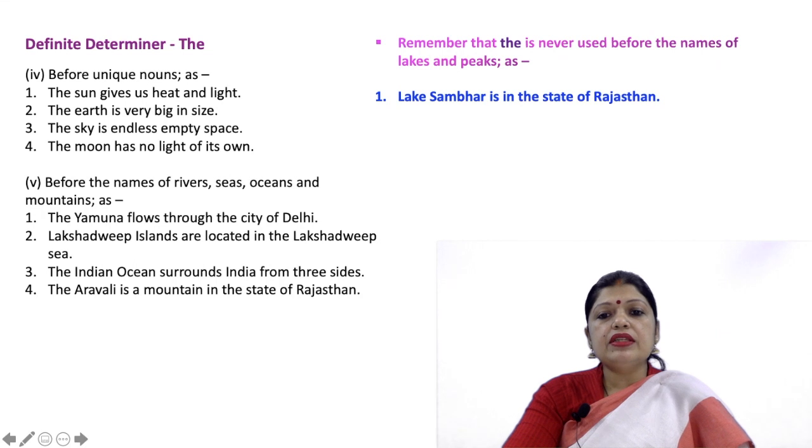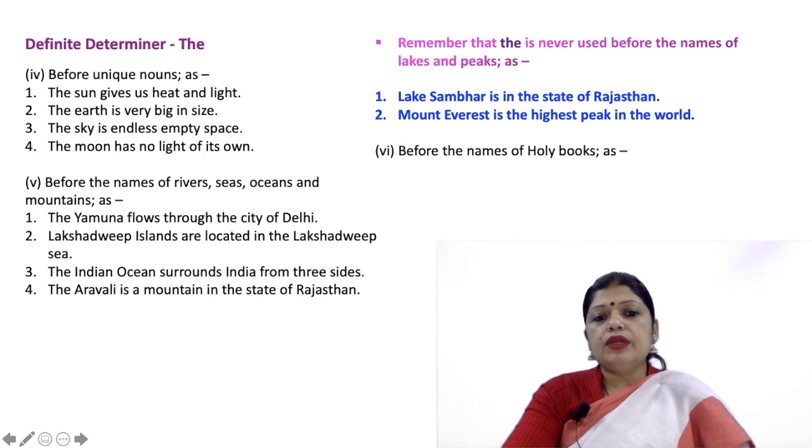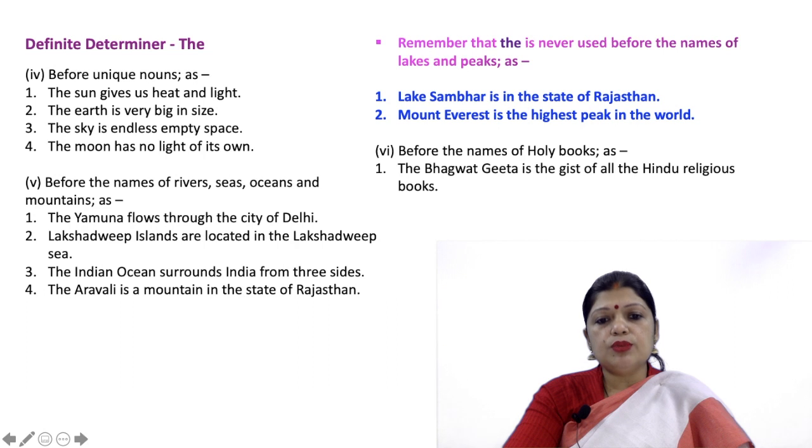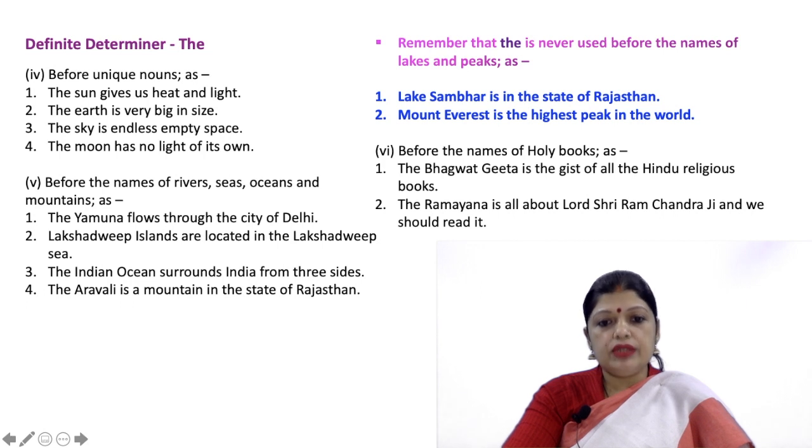We use the determiner The before the names of holy books: The Bhagavad Gita is the gist of all the Hindu religious books. The Ramayana is all about Lord Sri Ram Chandra ji and we should read it.